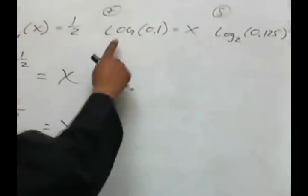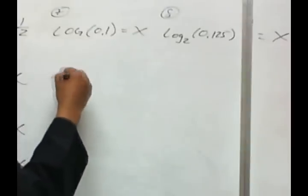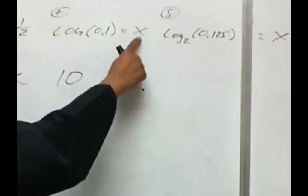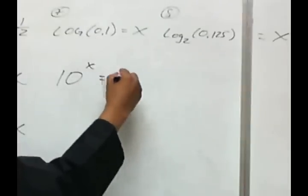Next. Here, we see there's a missing base. Whenever there's a missing base, the base is assumed to be 10. So, this will be 10 to the x, equaling this argument right here, make that the answer.